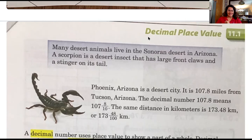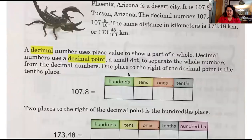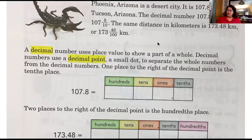There's that decimal — and remember we've been working all year on the word 'and,' and I told you it had to do with decimals. The same distance in kilometers is 173 and 48 hundredths kilometers. A decimal number uses place value to show a part of a whole. Decimal numbers use a decimal point — a small dot — to separate the whole numbers from the decimal numbers.